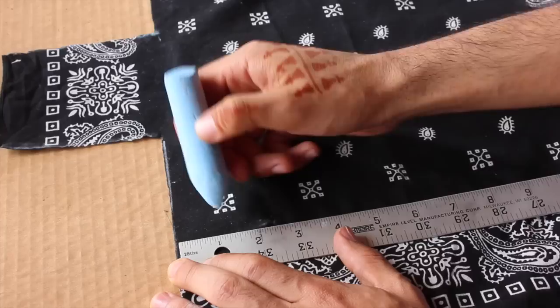Next, measure out one 2x6 inch panel. This is going to be the middle part of your bow tie.